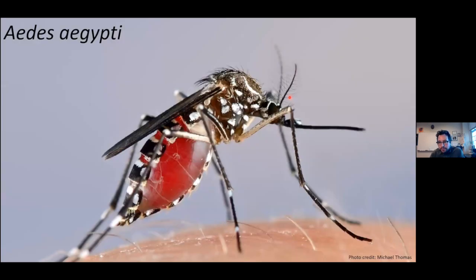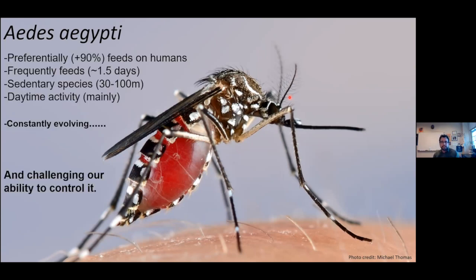Aedes aegypti is found in most urban areas in the tropics and subtropics. It was found in Atlanta for a long time and was luckily eliminated, but populations exist a couple of hours south in Columbus, Georgia. This mosquito is really adapted to live with humans — it's a close relative of the Asian tiger mosquito in your yard, but Aedes aegypti has evolved to primarily feed on humans. If you put a dog next to it, it's going to bite you.